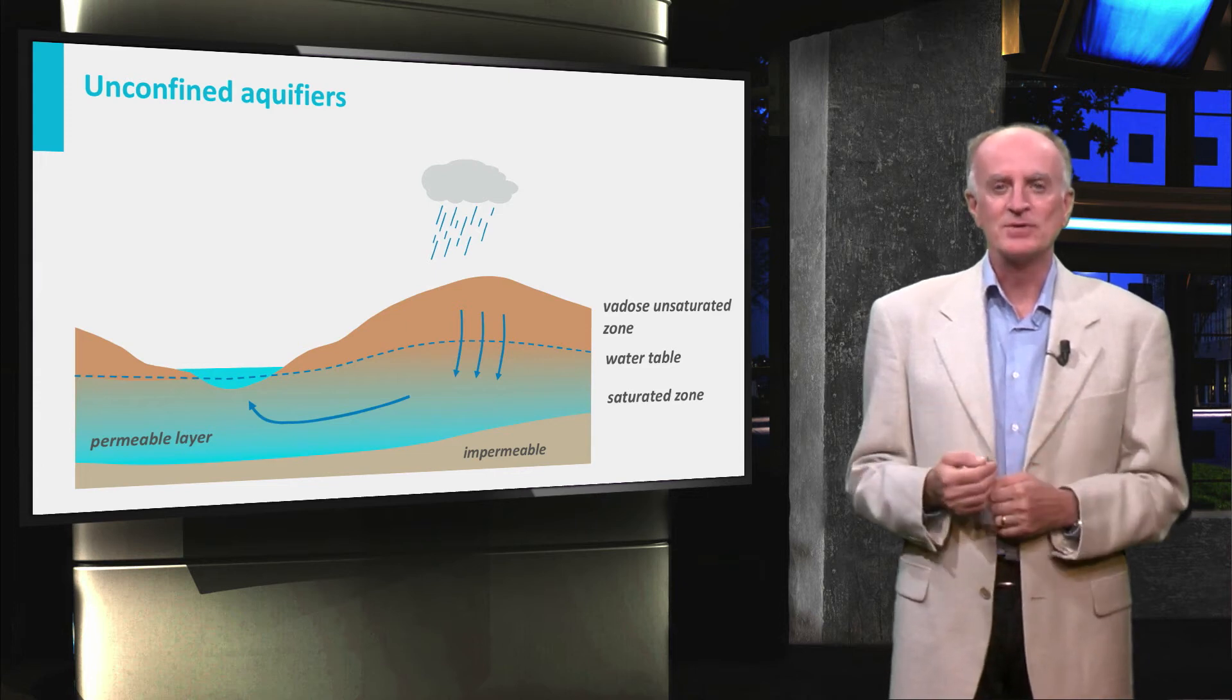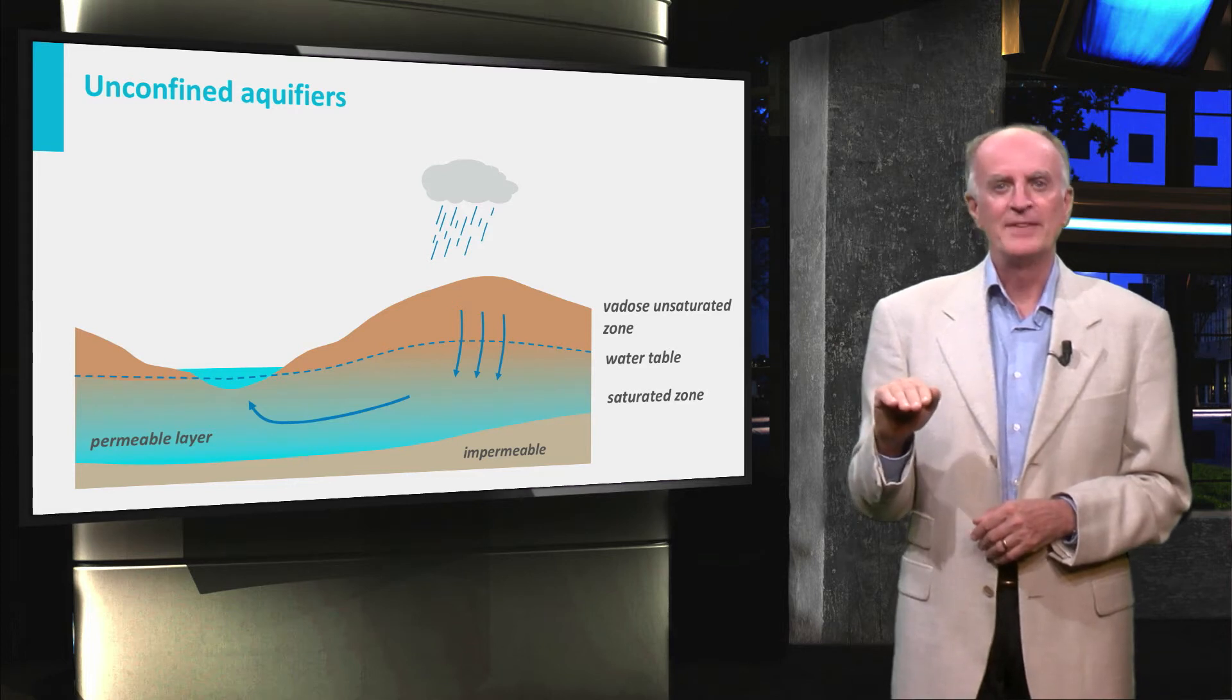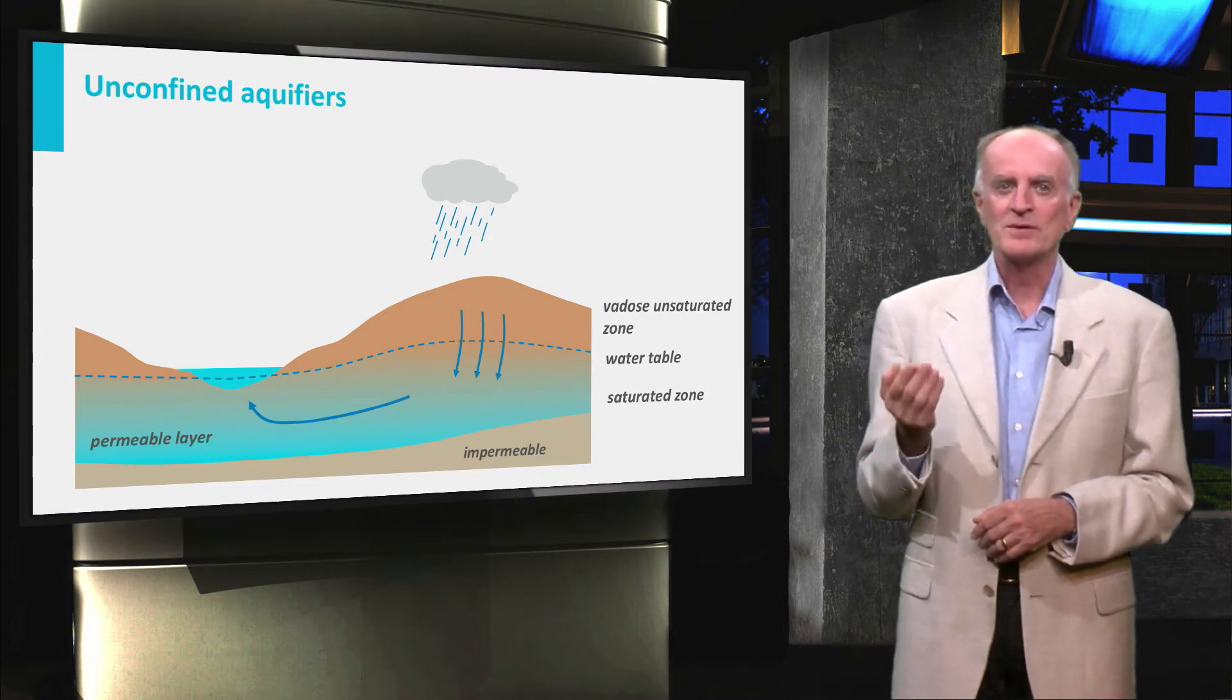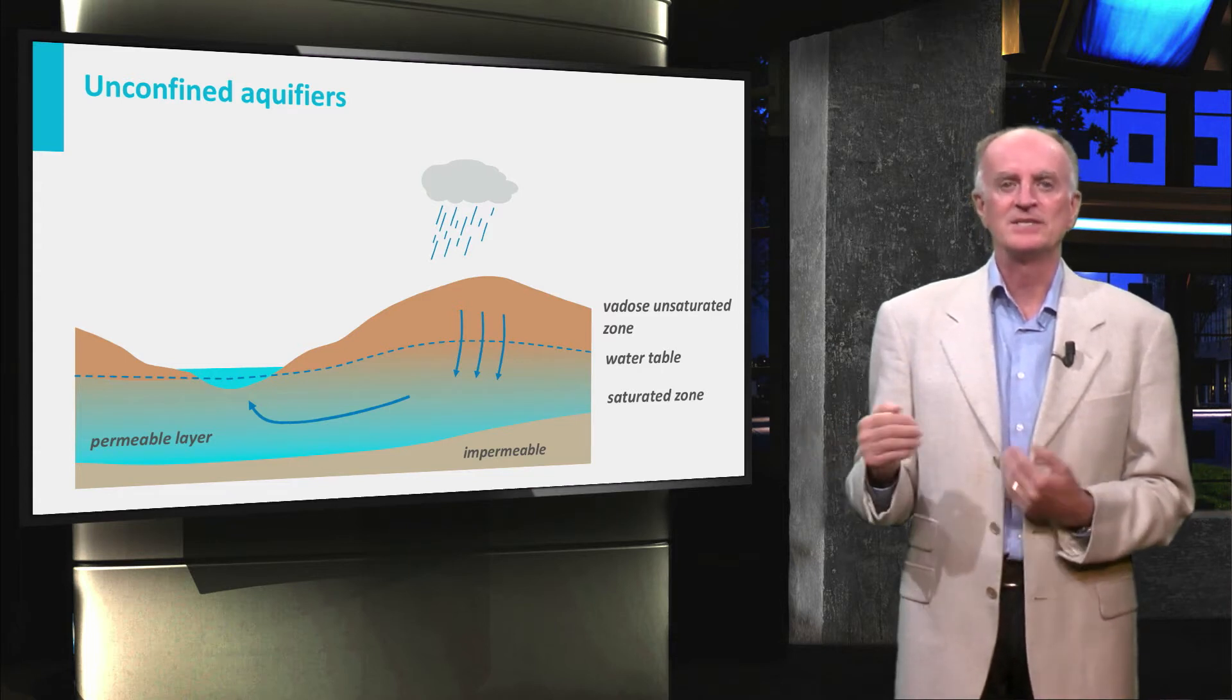Note that in the scheme shown in the slide, the water table intersects the topography at the level of the river, which means that the water will flow from the aquifer into the river. The river is a discharge zone.